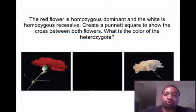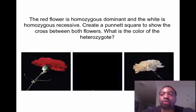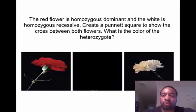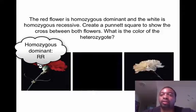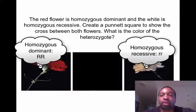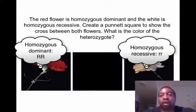This video is about incomplete dominance and codominance. Let's start off with a traditional Punnett square problem. We have two flowers that we're going to mate. The red flower is homozygous dominant while the white flower is homozygous recessive. Create a Punnett square to show the cross between two flowers, and then what's the color of the heterozygote?